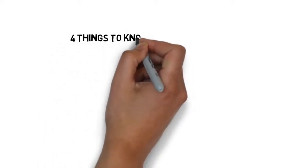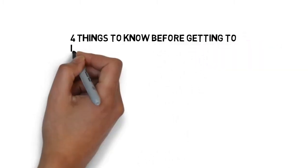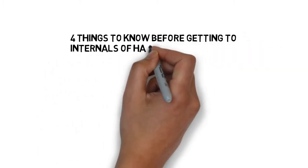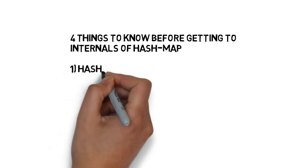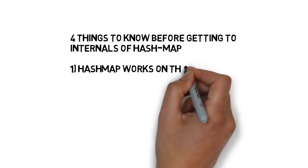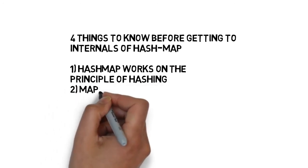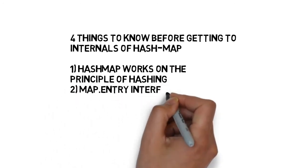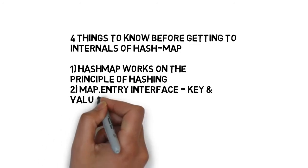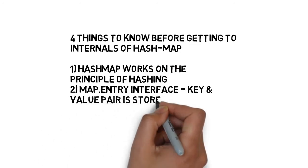Four things to know before we get into the internals of HashMap. A HashMap works on the principle of hashing. We also need to know about the map.entry interface. The key and value pair is stored as an object of entry class in a bucket. We also need to understand the hash code and equals method.